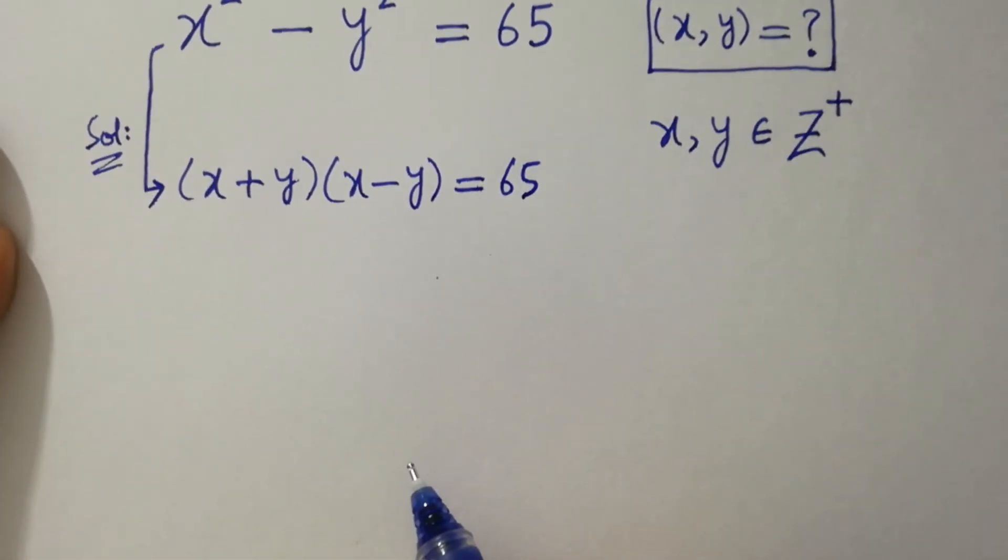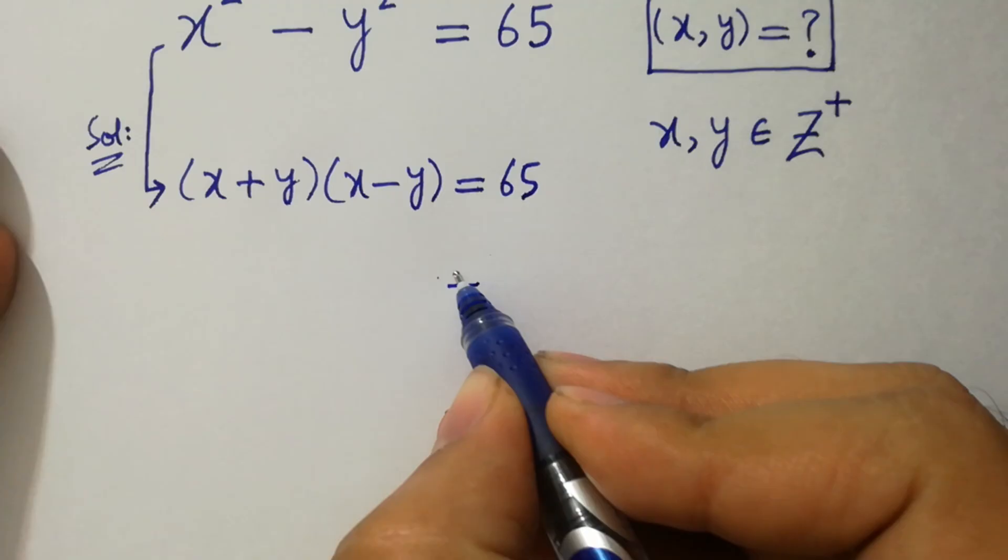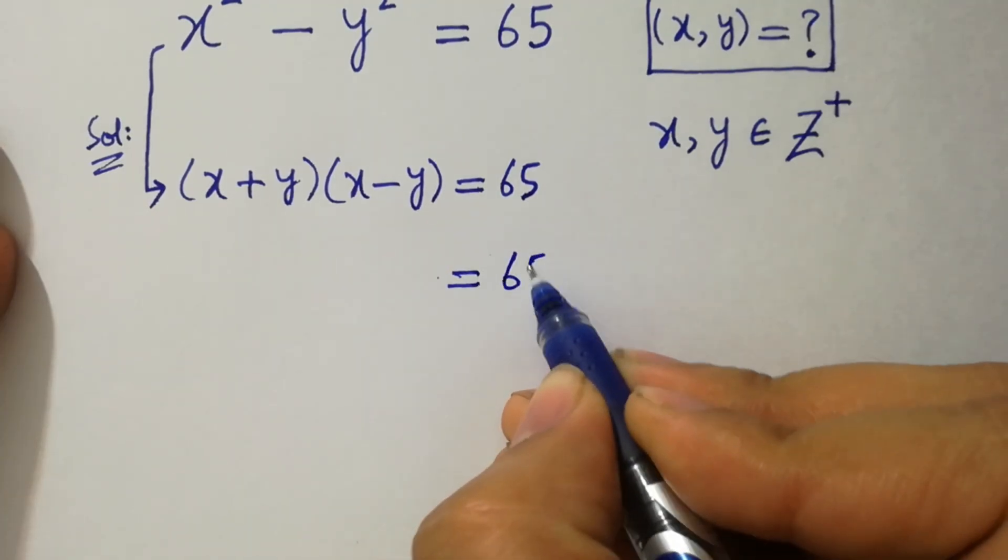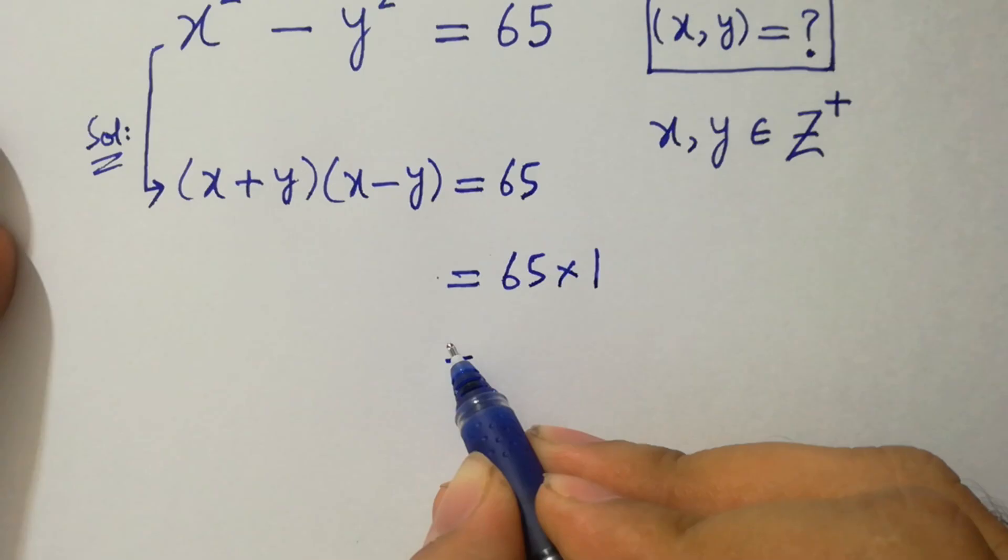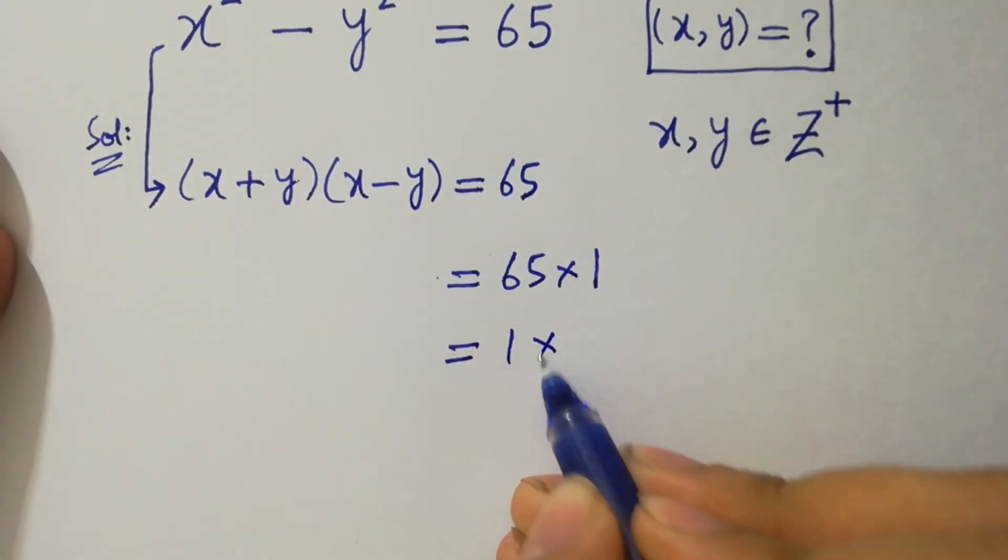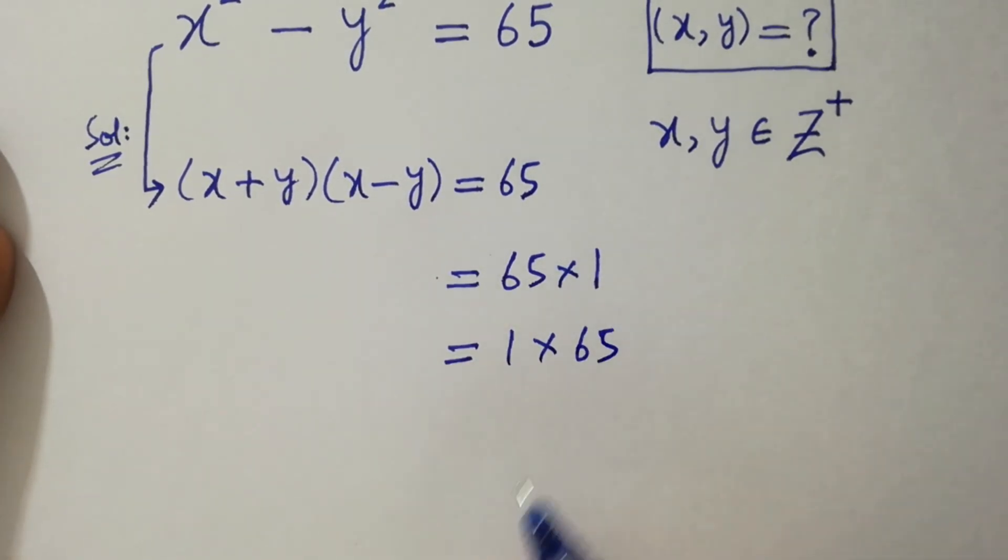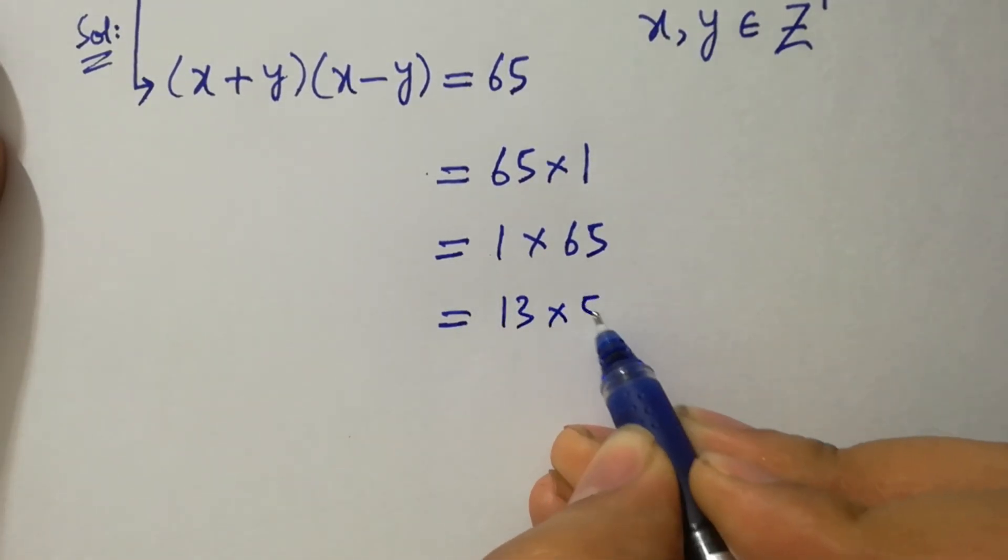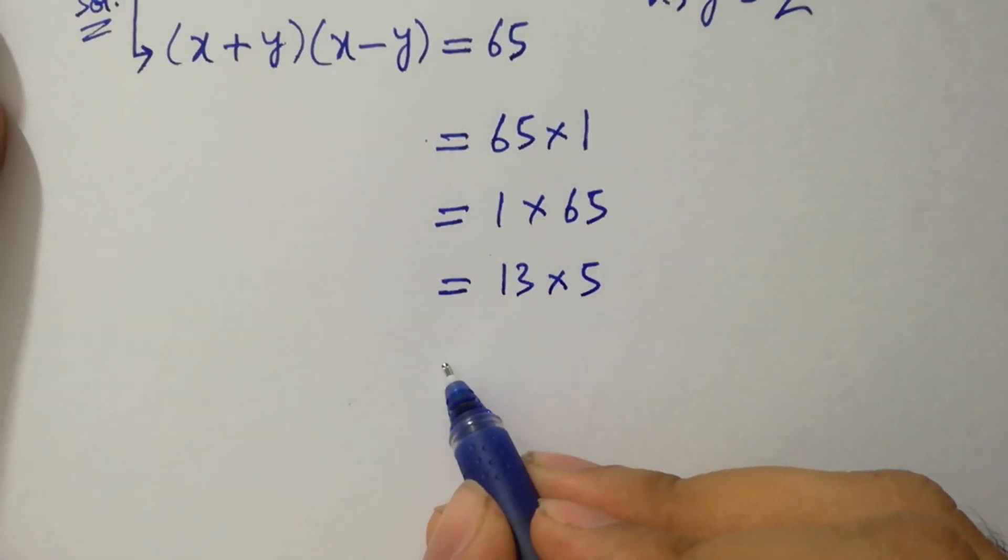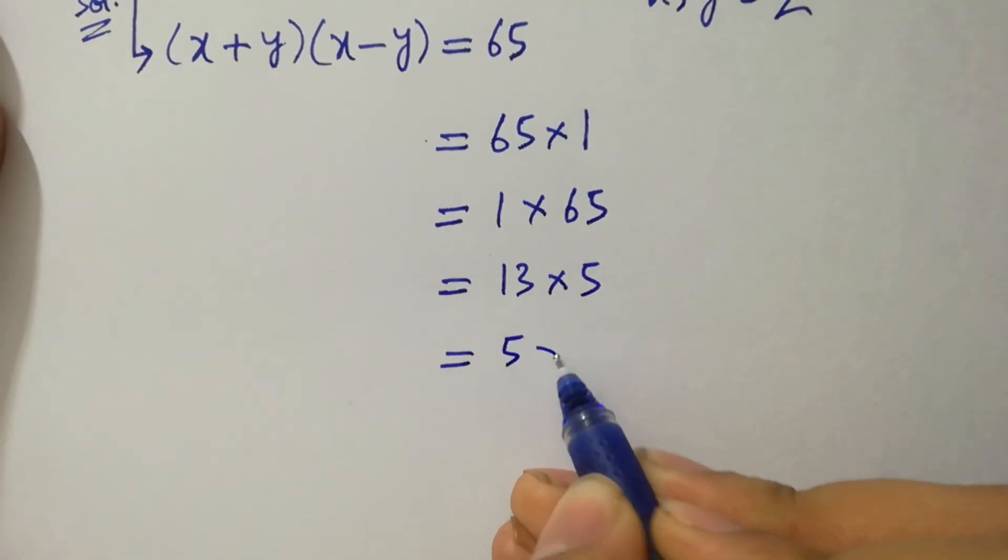We have choices here. 65 times 1 or 1 times 65 or 13 times 5 or 5 times 13.